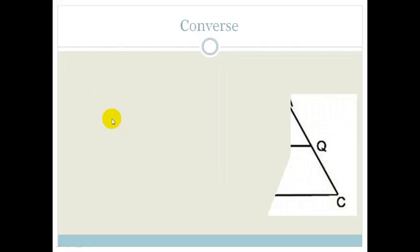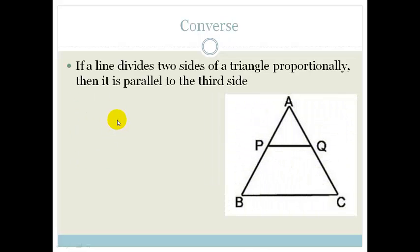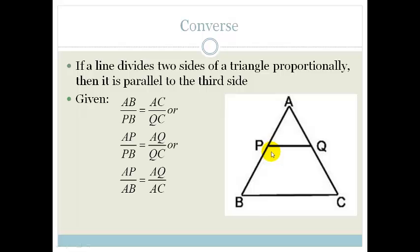Now let's look at the converse. The converse says that if the line divides the sides proportionately, then it is parallel. In other words, if we're given that AB over PB equals AC over QC, or AP over PB equals AQ over QC, or AP over AB equals AQ over AC, then we know that PQ is parallel to BC.